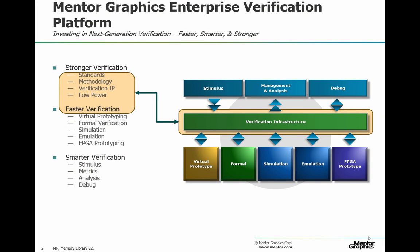I'd like to give you an overview of Mental Graphics Enterprise Verification Platform and the importance of Verification IP within it. The core of the EVP is a number of fast verification engines that satisfy all your verification needs. These range from virtual prototyping through formal verification, simulation using Questa, emulation on Veloce and FPGA prototyping. These engines have common mechanisms for stimulating your design, for collecting metrics on the tests you have run, for debugging any issues you find and then analysing the results. This means that you can move tests from one engine to another, according to whichever engine is the most appropriate for the verification task in hand, and you can continue to use a common debug and analysis environment while you're doing that.